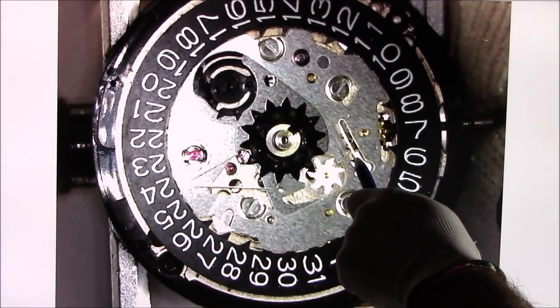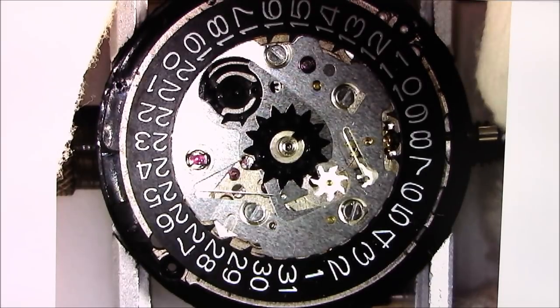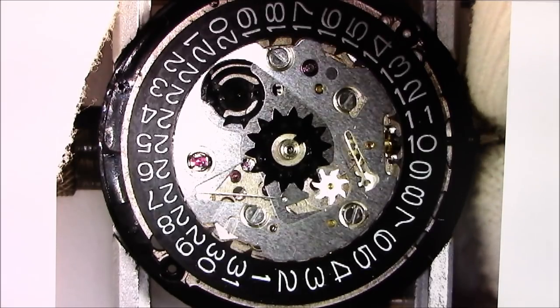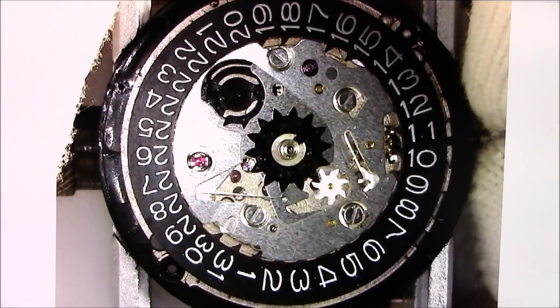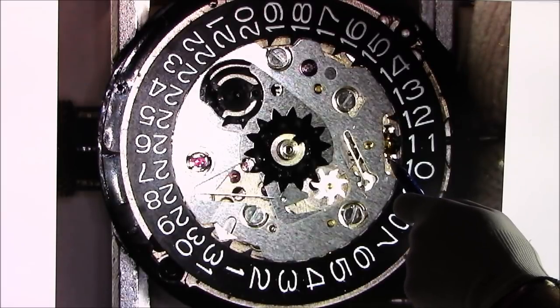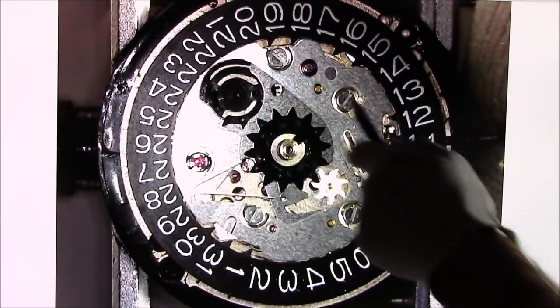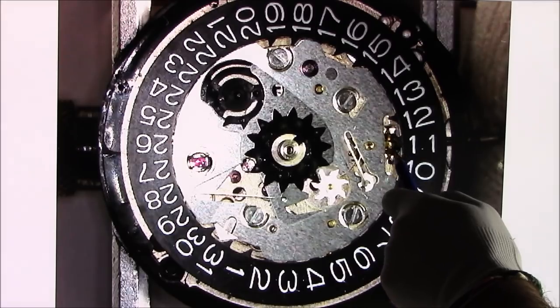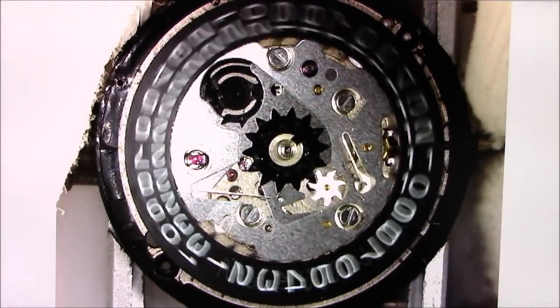So as I turn the crown clockwise, I am turning that white gear. It's turning clockwise, and it is hitting these prongs that we hit before over here. It's hitting them over here and advancing the date manually. Pretty cool.